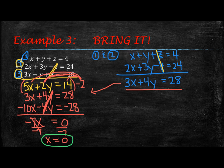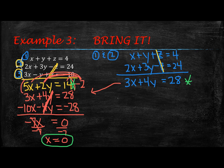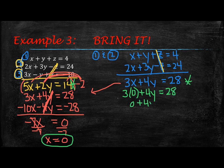If you notice, back in the equations I have with x and y, I can choose whichever one to plug into. I'll plug my x value of 0 into the equation 3x plus 4y equals 28. So 3 times 0 plus 4y equals 28, which gives 0 plus 4y equals 28, so 4y equals 28, which means y equals 7.